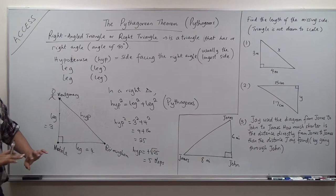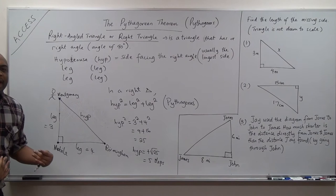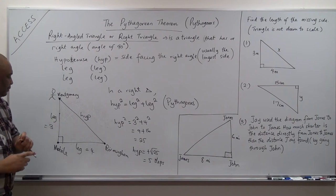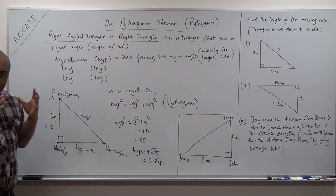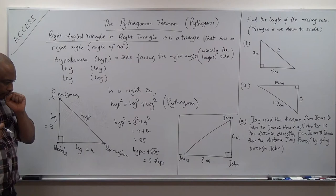In a right triangle — and it must be a right triangle; they must tell you it's a right triangle or they must put the right angle in it — when you've confirmed that it's a right triangle, you apply the Pythagorean theorem.